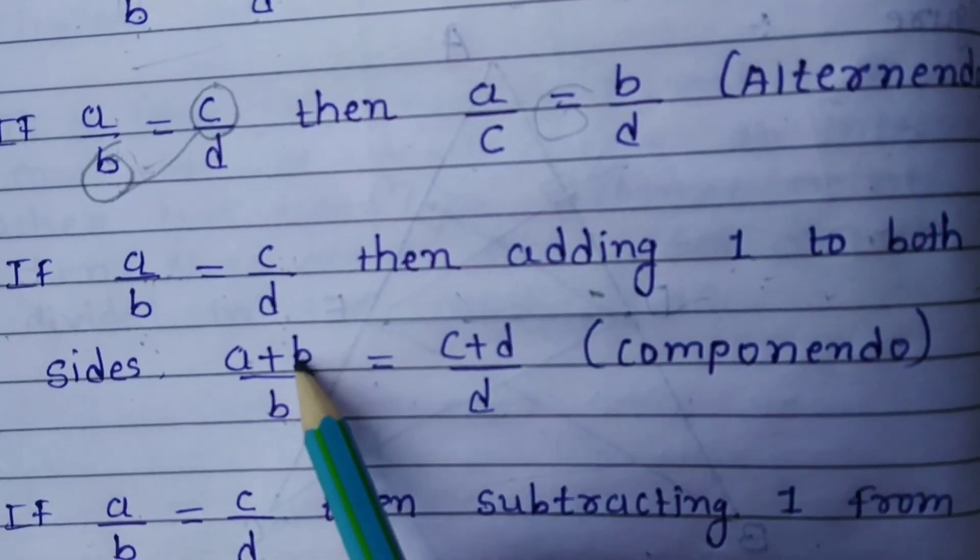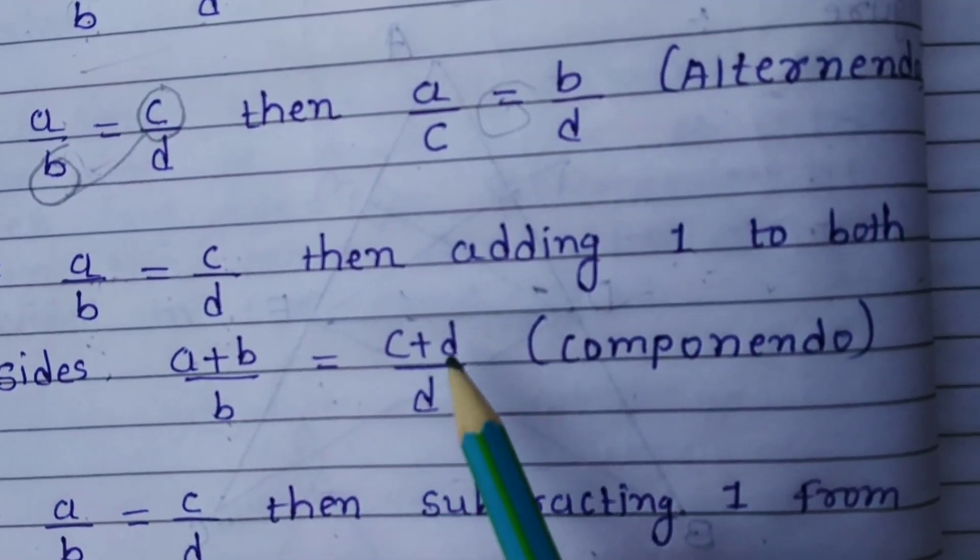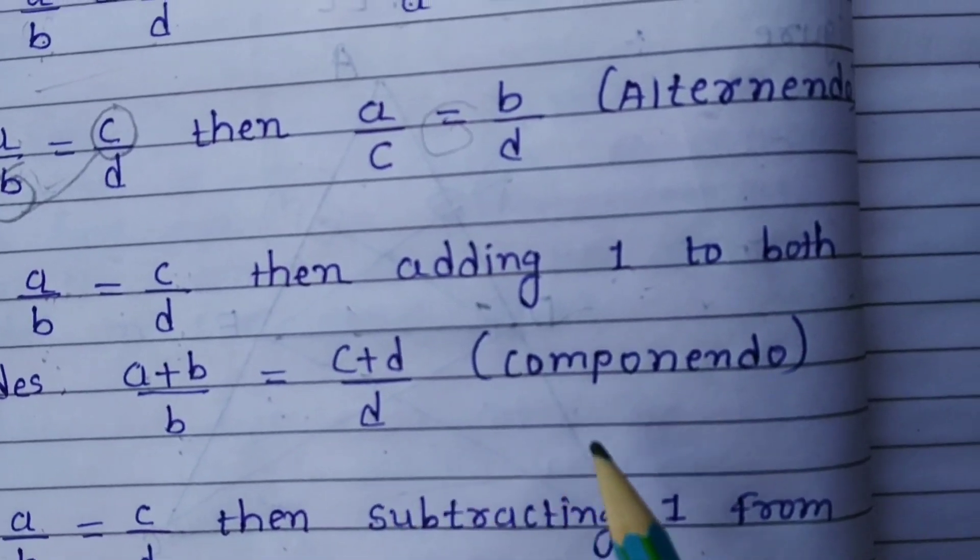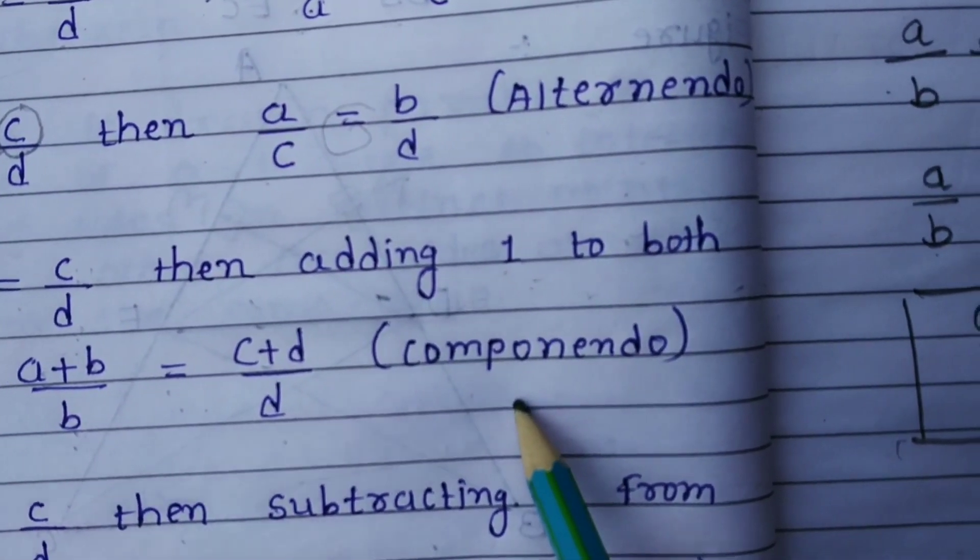This is the third result: if a upon b is equal to c upon d, then adding one to both sides, the answer is a plus b upon b is equal to c plus d upon d. It is known as componendo. Thank you.